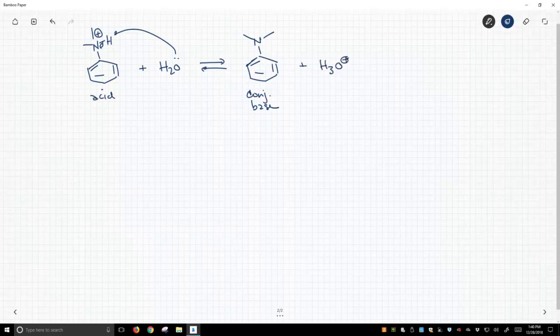And this molecule, this protonated dimethyl aniline, has a pKa of around 5.